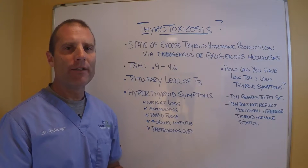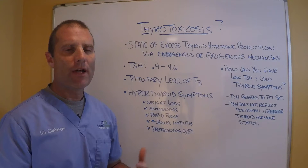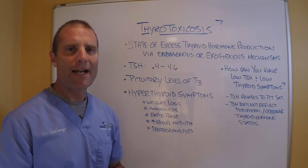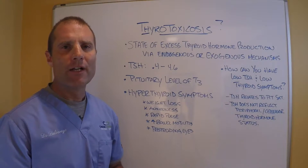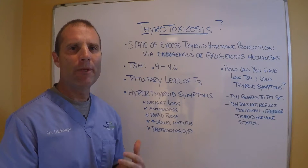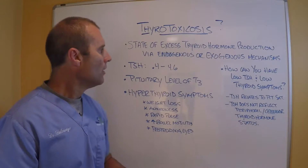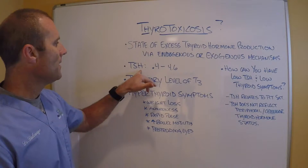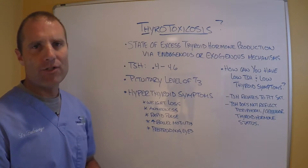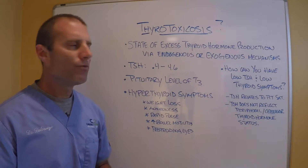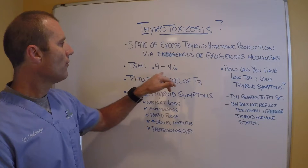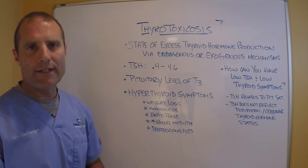How do we come up with a diagnosis of thyrotoxicosis? How does your endocrinologist or your doctor come up with that terminology? Well, it's really all based on TSH. The lab TSH range is 0.4 to 4.6.